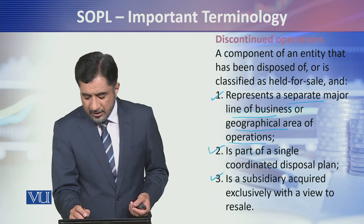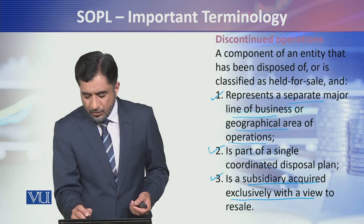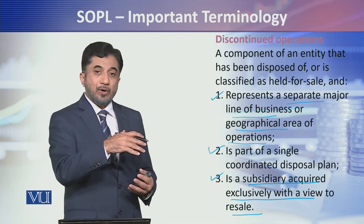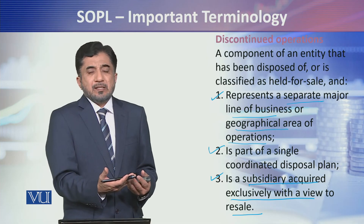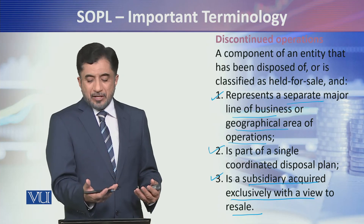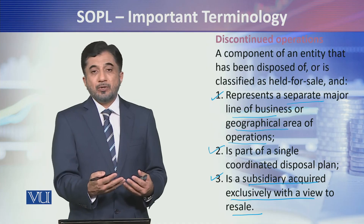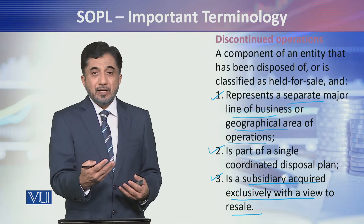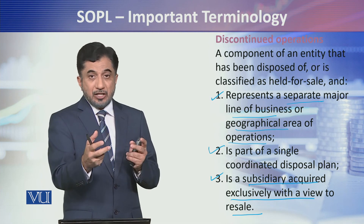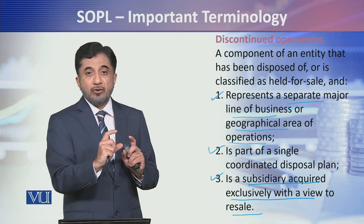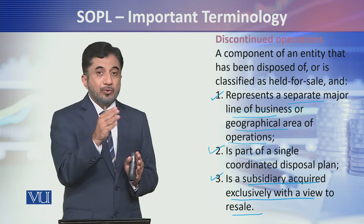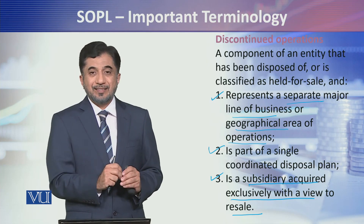इसी तरह से वो कहता है कि एक subsidiary company आपने acquire की थी exclusively with the view of reselling — आपने acquire किया resell करने के लिए, आपका मकसद ही नहीं है उस subsidiary को continue करने का — तो उसको भी आप discontinued operation के ज़ुम्रे में लेंगे। यह दो segments बहुत important हैं, आपको इन्हें समझना और सीखना है while preparing statement of profit or loss। आपके examination में इन दोनों terminologies से मुतलक कोई question पूछ सकता है। Thank you.